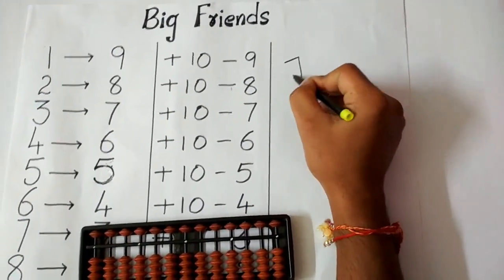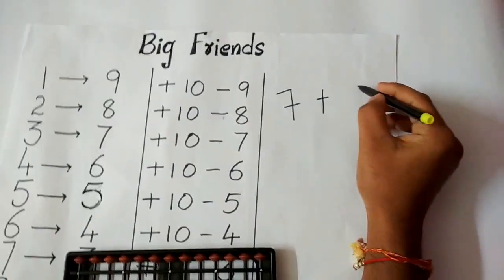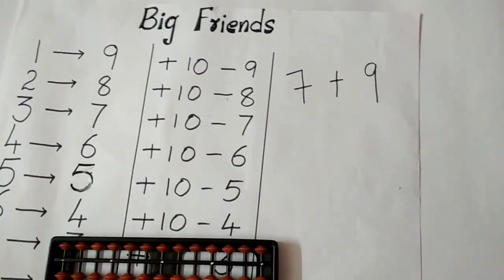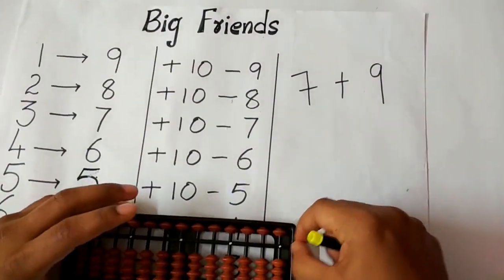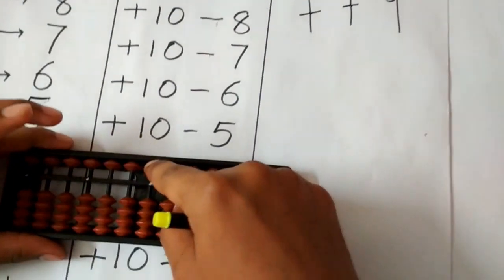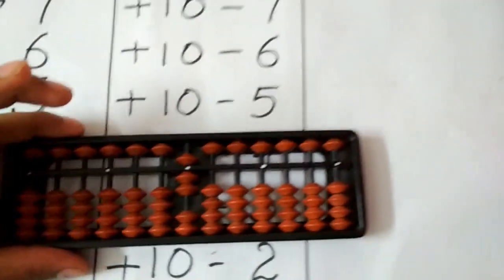Let us try to add two numbers. They are 7 plus 9. Step 1 in addition process is, as usual, place 7 on abacus.